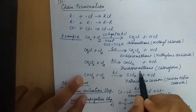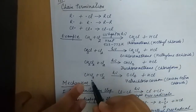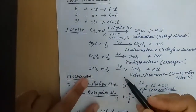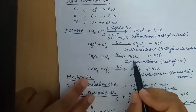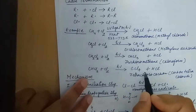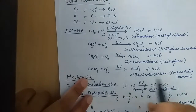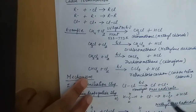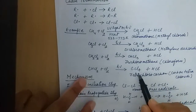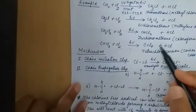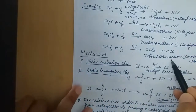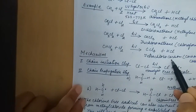Further chlorination gives CHCl₃, which is trichloromethane or chloroform, used as a solvent. Under favorable conditions, CCl₄ — carbon tetrachloride — is formed. This is all about the halogenation of methane.